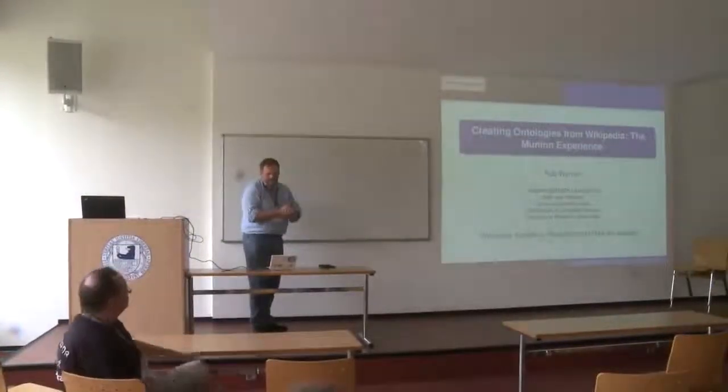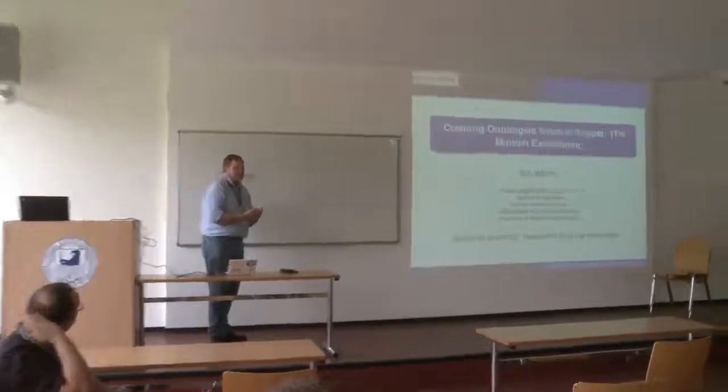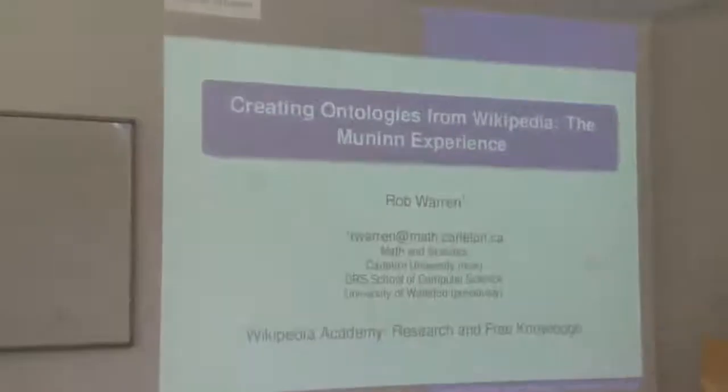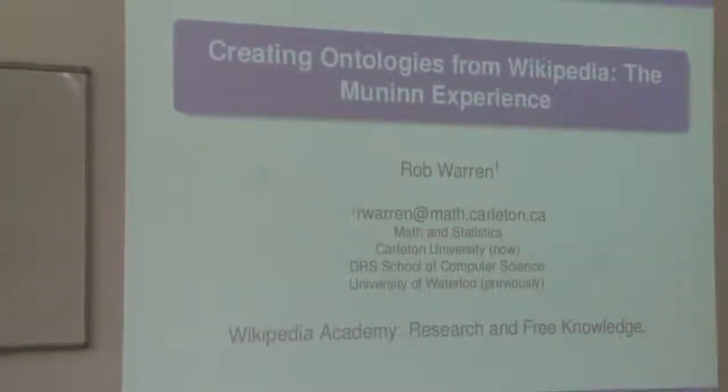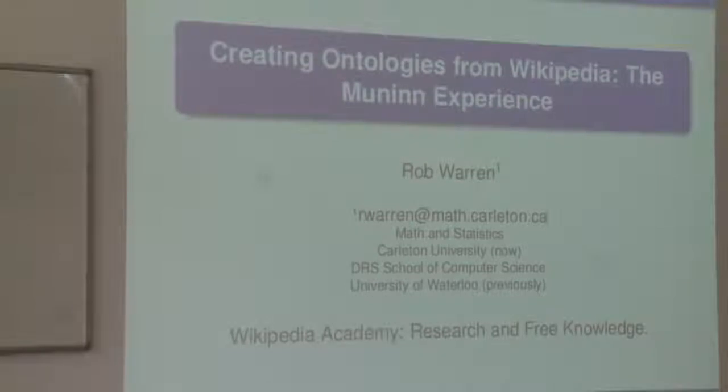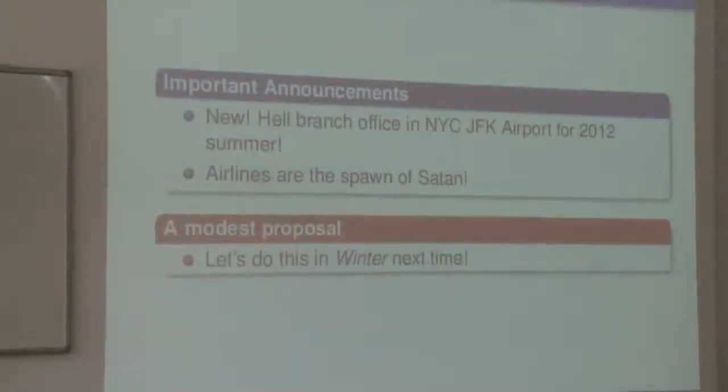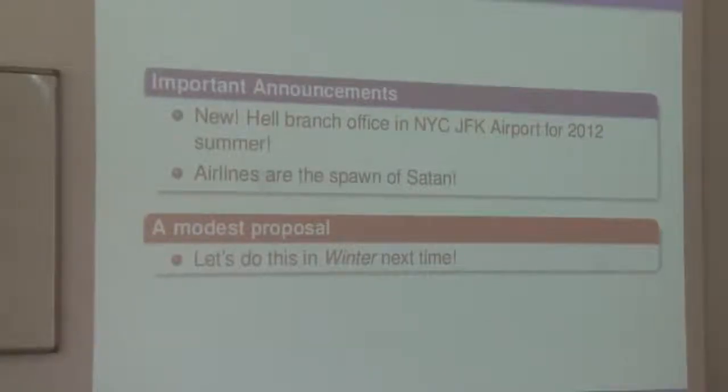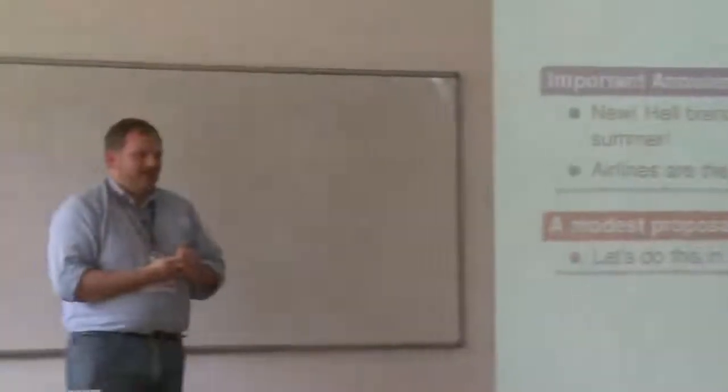The next talk is titled 'Creating Ontologies from Wikipedia: Union Experience.' The Union project takes archives from the Great War and tries to create databases of events from the First World War. The speaker begins with some humorous travel announcements — mentioning a bad experience at JFK Airport and suggesting that future conferences should be held in winter for fewer tourists and the option to go skiing in the afternoon.